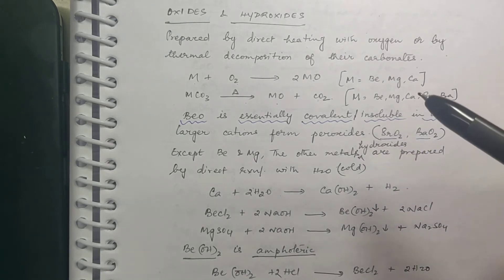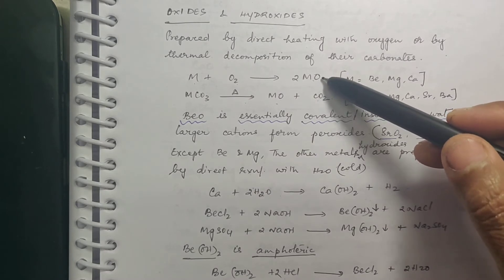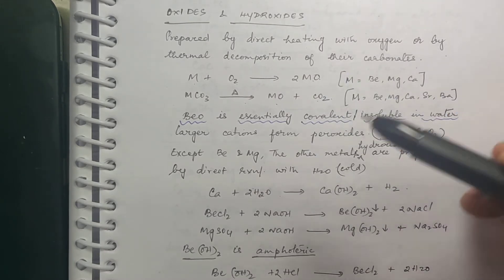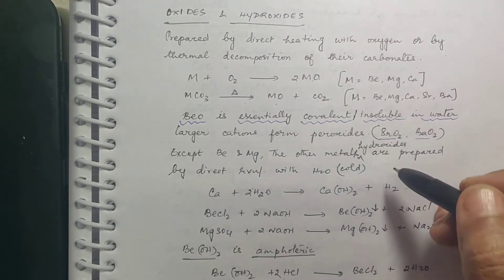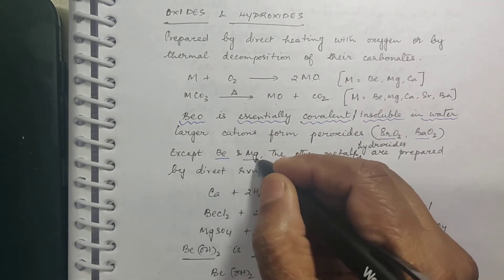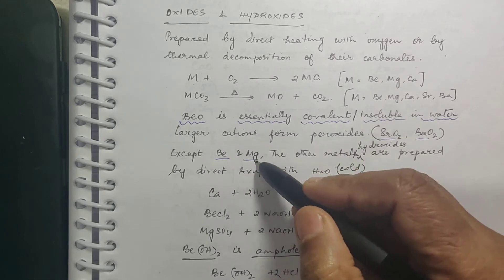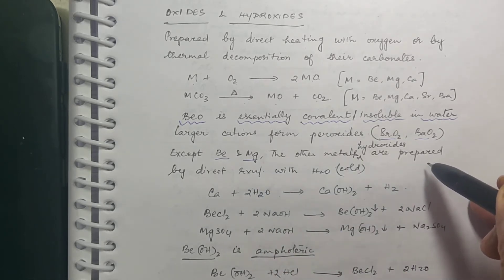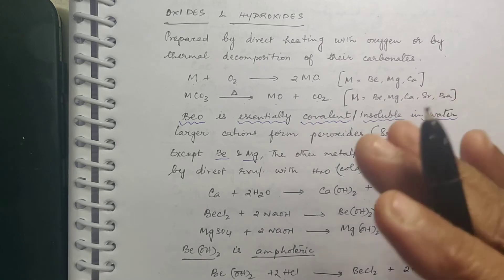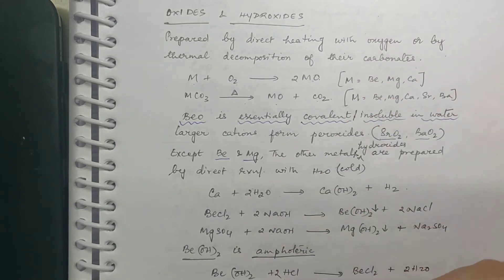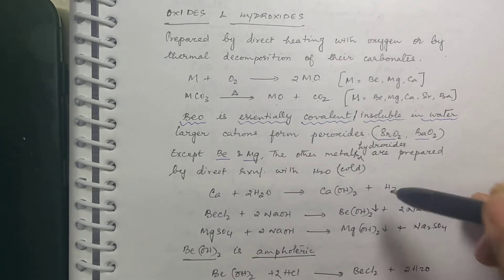The other metals form their corresponding monoxide only. Except beryllium and magnesium, the other metal hydroxides are prepared by direct reaction with water. You cannot prepare magnesium hydroxide or beryllium hydroxide by directly reacting with water, because magnesium will not react with water — it will react only with hot water. The other metals, even in cold conditions, will react with water, liberating hydrogen gas.